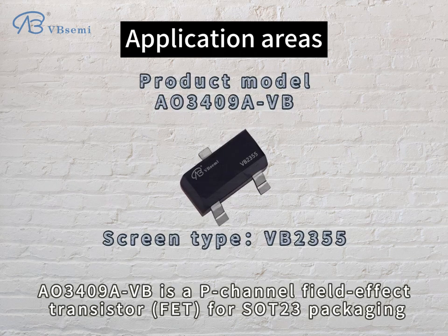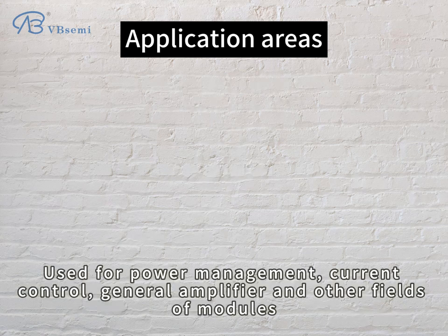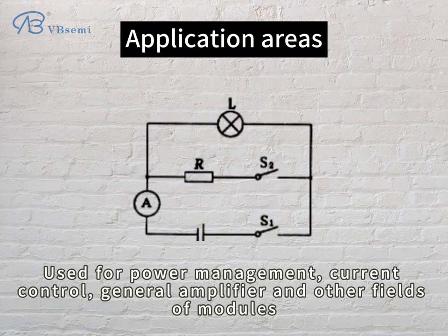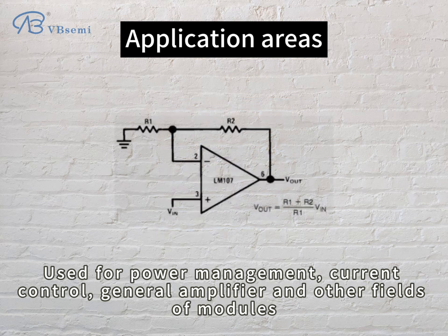AO3409 AVB is a P-Channel Field Effect Transistor (FET) in SOT-23 packaging, used for power management, current control, general amplifier, and other fields of modules.